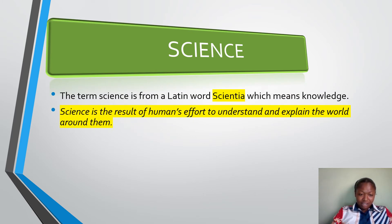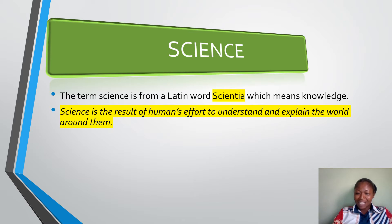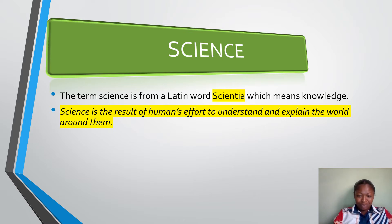The first explanation: science is the result of humans' effort to understand and explain the world around them — your effort to understand the world in which we are living in. For example, your effort to understand why the leaf on a plant is green, and the result you get from that effort, is called science.